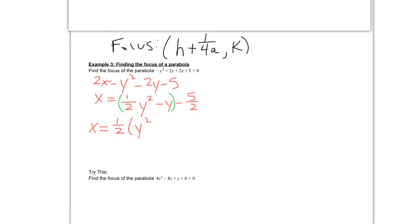Negative 1 divided by 1 half is going to give me a negative 2. So this becomes a minus 2y. Then I need to leave room for what I'm going to add in. And then outside of my parentheses, I have my minus 5 halves. And I'm going to save room for my opposite that I need to add in there.